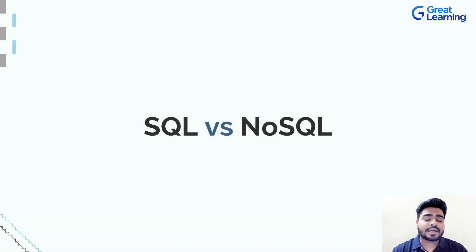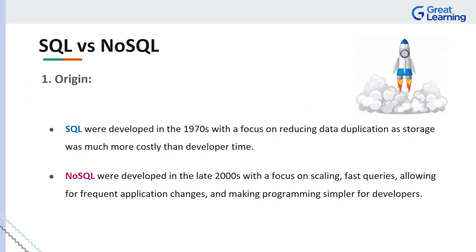Now let's look at the detailed comparison. The first point is origin. SQL was developed in 1970 with the focus on reducing data duplication, as storage was much more costly than developer time. NoSQL was developed in the late 2000s with a focus on scaling, fast queries, allowing frequent application changes, and making programming simpler for developers.